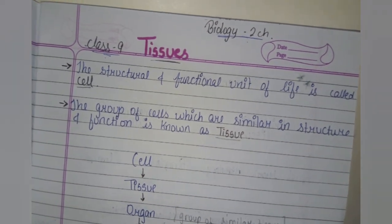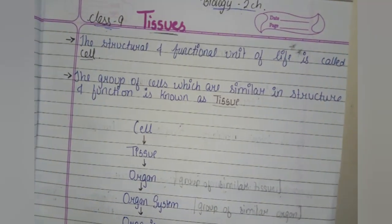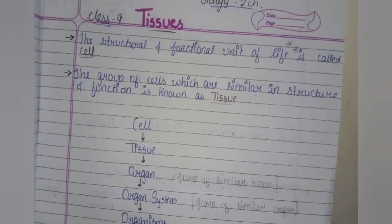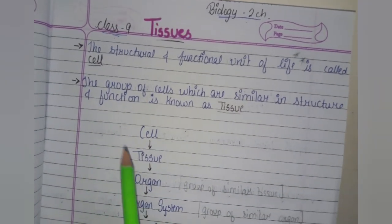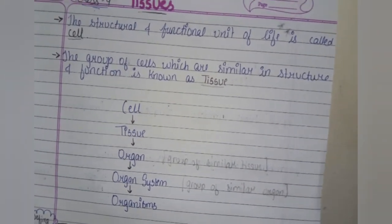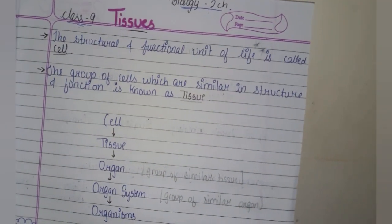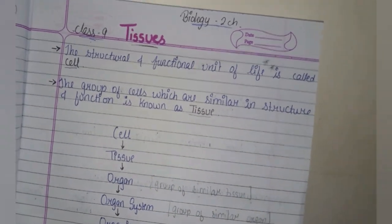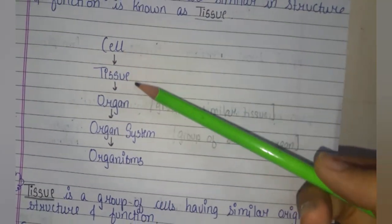It is the name of the chapter, so let us learn together. Tissue is a group of cells which are similar in structure and function. So the structural and functional unit of life is the cell, and a group of cells which are similar in structure and function is known as tissue.